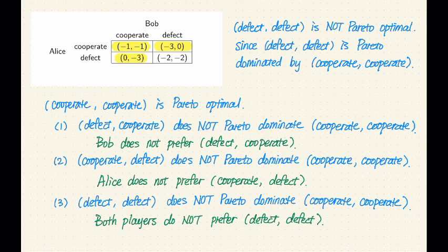First, let's verify that defect-defect is not Pareto optimal. How do we verify an outcome is not Pareto optimal? All we have to do is find another outcome that Pareto dominates this outcome. In this game, we can easily see that cooperate-cooperate Pareto dominates defect-defect, because both players strictly prefer cooperate-cooperate over defect-defect — they get a utility of minus one instead of minus two. Since defect-defect is Pareto dominated by another outcome, it cannot be Pareto optimal.